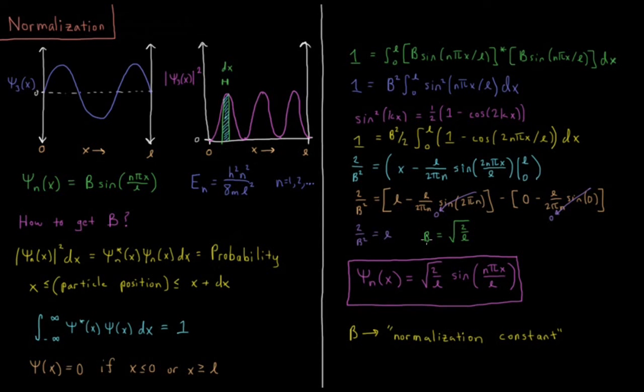So this value b here is what we would call our normalization constant. A normalization constant in that it ensures that the integral over all space of psi star psi is equal to 1, and it completes our wave function. And now we can move on to do various other things and interpret what our wave function means and compute other various properties of our particle from that.